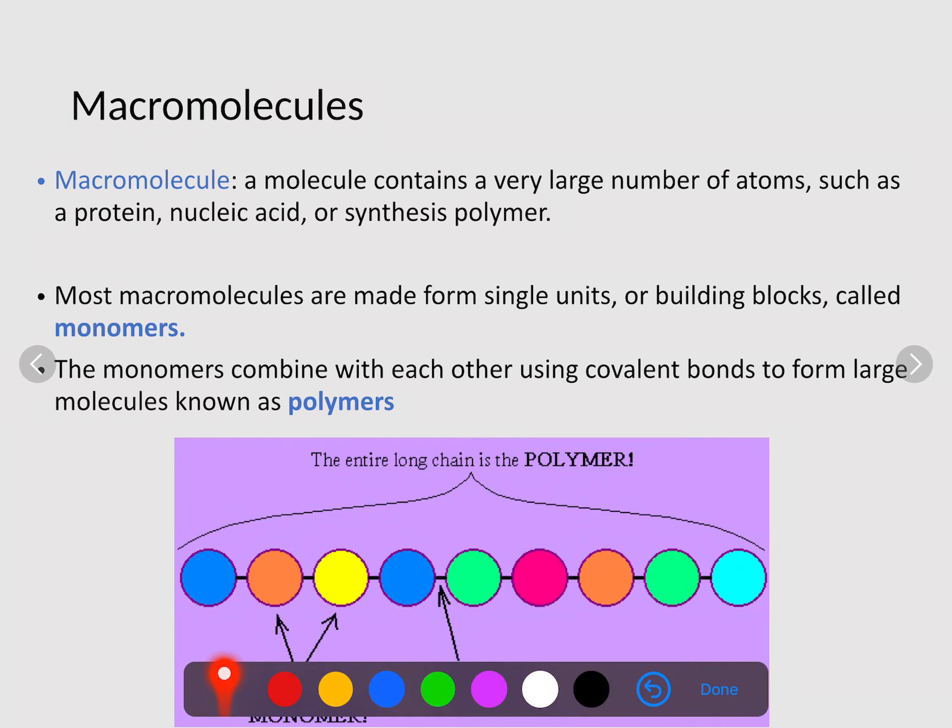A macromolecule is a molecule that contains a very large number of atoms, such as a protein, nucleic acid, or synthesis polymer. These proteins, nucleic acids, and synthesis polymers are made of many repeating units called monomers. A monomer is a single unit or building block.